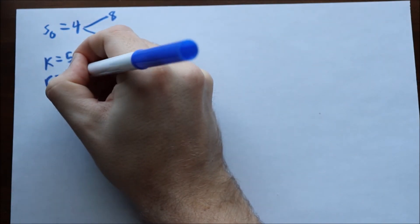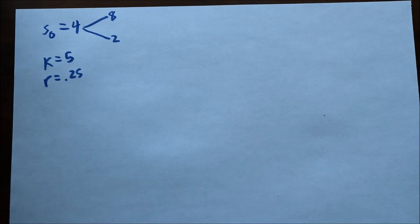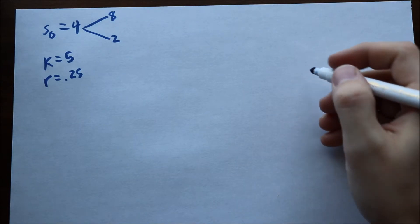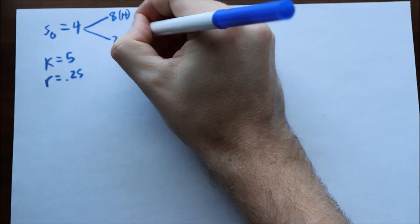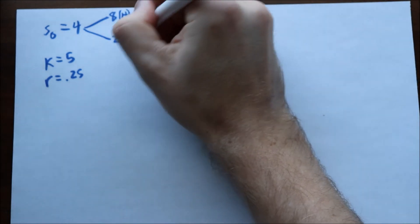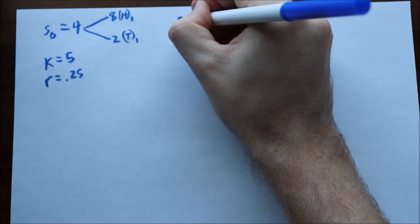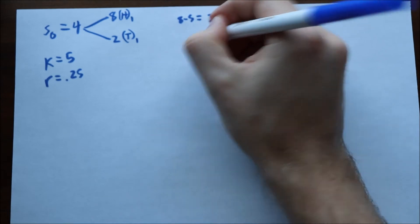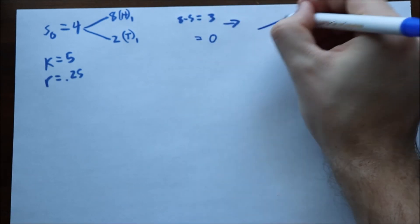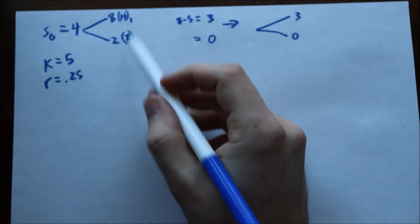R, your interest rate, is 0.25. For those not familiar with a call option: when the price goes up you make money, and when the price goes down you get nothing, but you have to pay for the option. At heads (H), we do 8 minus 5, which gives a value of 3. At tails (T), we get 2 or 0, so the option value at time 1 is either 3 or 0.